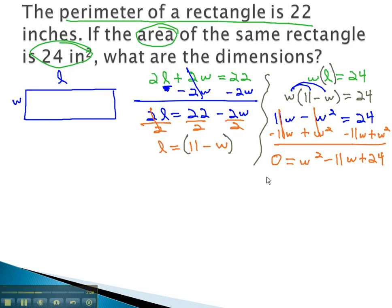We could solve this by either factoring or using the quadratic formula, but let's see if we can factor it first. Factoring gives us W minus 8 times W minus 3. And now we can set each factor equal to 0 in order to solve our equation.